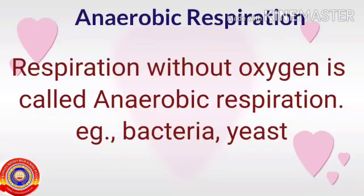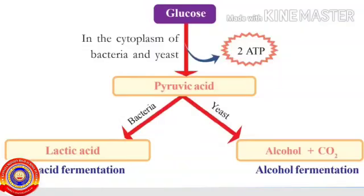Let's look at the chemical changes of pyruvic acid in bacteria and yeast. In the cytoplasm of bacteria, glucose is converted to pyruvic acid in the presence of two ATP molecules, giving rise to lactic acid. In yeast, glucose is also converted to pyruvic acid with two ATP molecules, and as a result, alcohol and carbon dioxide are formed.